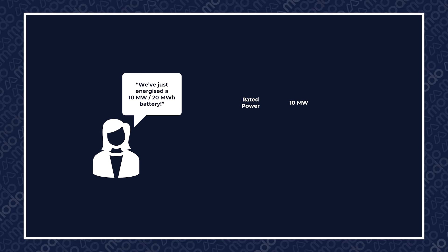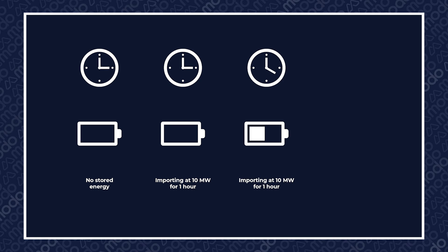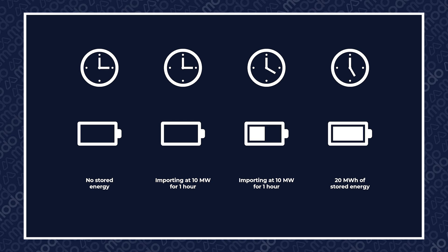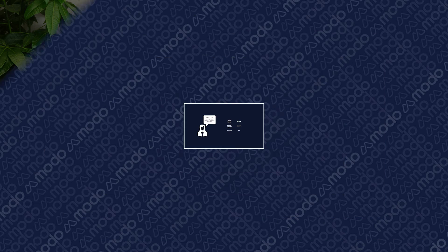Let's break this down. 10 megawatts just refers to the rated power of the site — that is, the highest rate at which the battery can import or export electrical energy. 20 megawatt hours refers to the amount of energy the battery can store. So in this example, if the battery has no stored energy, it could import at 10 megawatts for two hours to store 20 megawatt hours of energy. In this example, we'd say the battery has a two hour duration, but that's a story for another day.